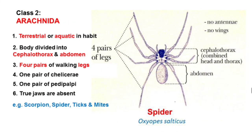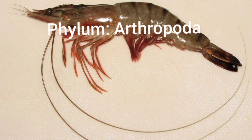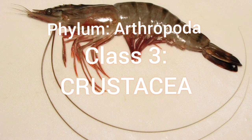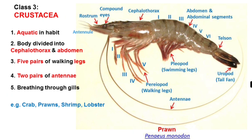Class 2 is Arachnida. Animals belonging to Arachnida are terrestrial or aquatic in habit. The body is divided into cephalothorax and abdomen — the cephalothorax being a fused head and thorax. There are four pairs of walking legs. They have one pair of chelicerae, one pair of pedipalpi, and antennae are absent. Examples are scorpions, spiders, ticks, and mites.